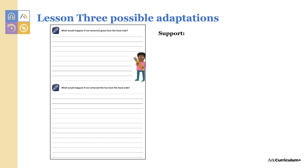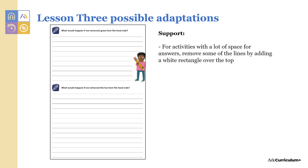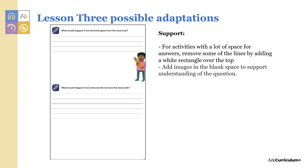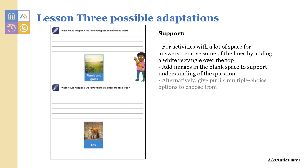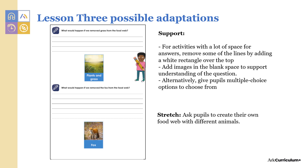In lesson three, pupils have a lot of space to complete two write questions. For activities with a lot of space for answers, you can remove some of the lines by adding a white rectangle over the top. You could also add images in the blank space to support understanding of the question, or give pupils multiple choice options to choose from. Stretch pupils by asking them to create their own food web with different animals.